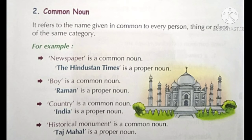Boy is a common noun — kyunki boy bahoot saare hoote hain, toh same category ke liye hum ne boy word use kiya. But Raman — hum ne ek particular person ki baat ki hai, toh Raman is a proper noun. Country is a common noun — bahoot saari hain. But India ki baat karein toh India is a proper noun. Historical monument is a common noun — kyunki yeh bahoot saare hain. But Taj Mahal ek hi hai, toh Taj Mahal is a proper noun.